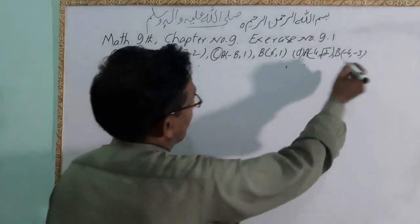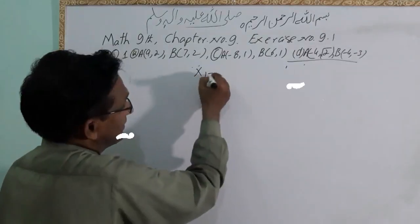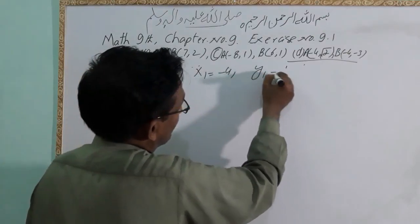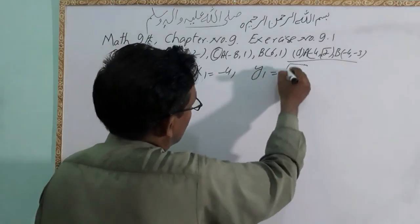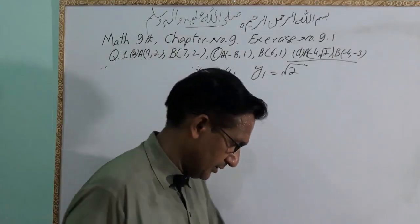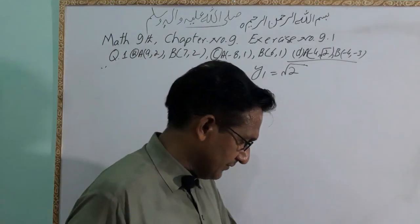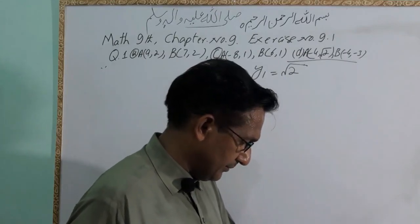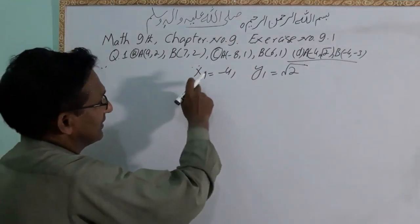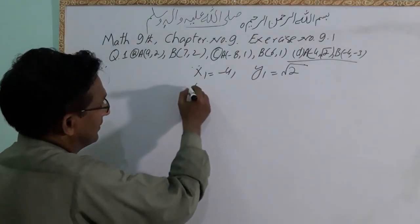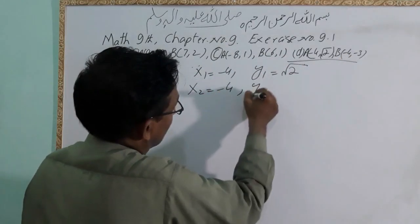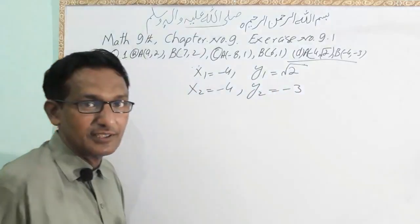And this is part D. x1 is equal to minus 4, y1 is equal to 2 square root, and x2 is minus 8. The coordinates are: minus 4 and minus 4. x2 is minus 4 and y2 is equal to minus 3. This is what we have to do.